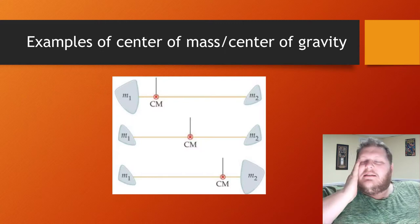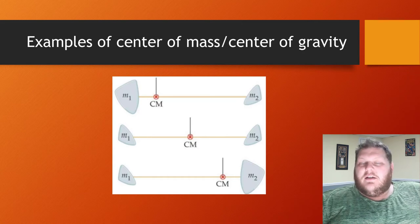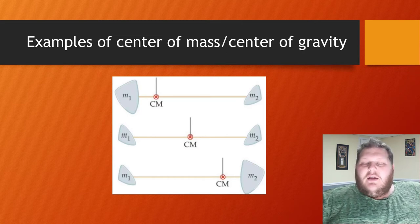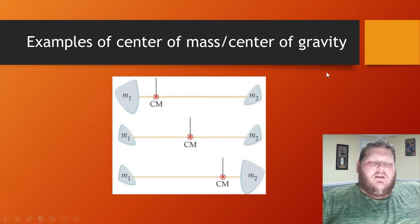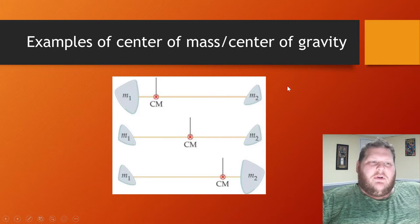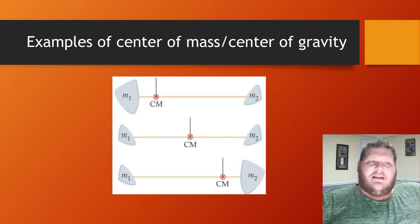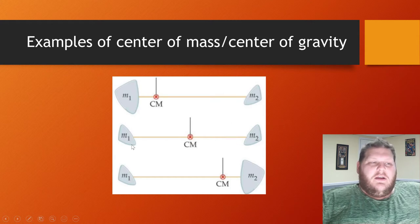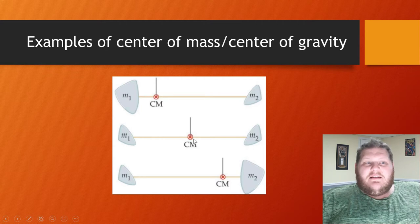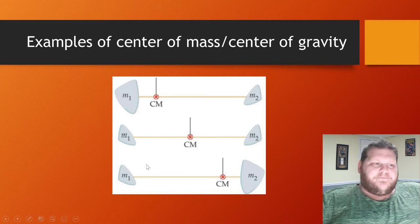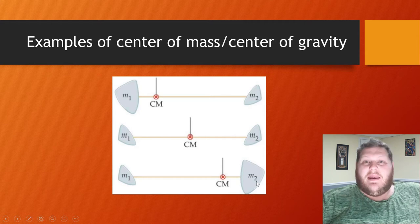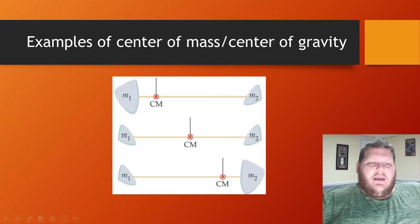Center of mass is just the average point of where most of the mass is. For example, with two masses attached by a stick: when you have a really big mass on one side and a smaller mass on the other, the center of mass tends towards where most of the mass is. It's not necessarily centered on the stick unless the two masses are equivalent, in which case the center of mass is in the middle.